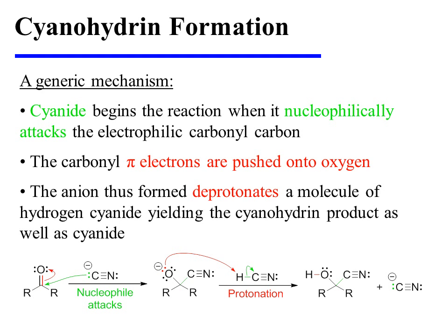Cyanide begins the reaction when it nucleophilically attacks the electrophilic carbonyl carbon. The carbonyl pi electrons are pushed onto oxygen as a result, and the anion that is thus formed deprotonates a molecule of hydrogen cyanide, yielding both the cyanohydrin product as well as another molecule of cyanide.